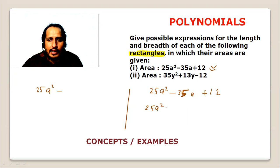25a squared minus 50a and 15a. The factoring is easy, this is very simple.